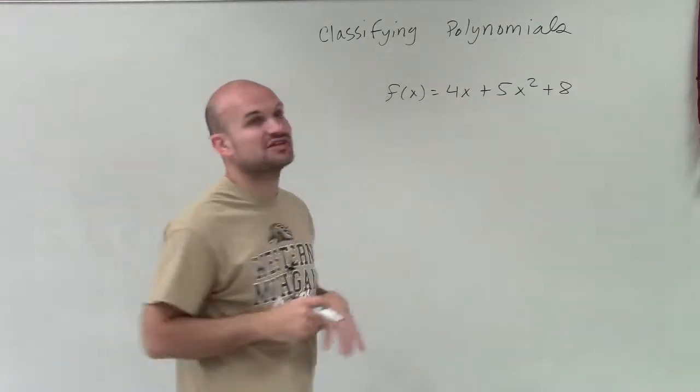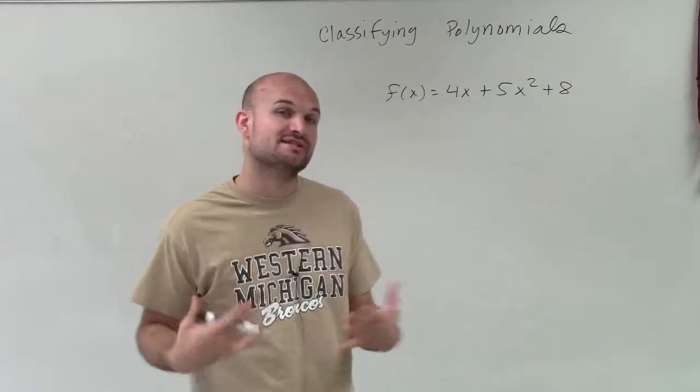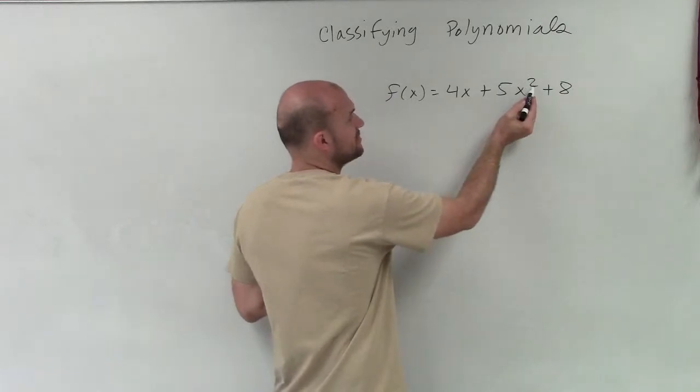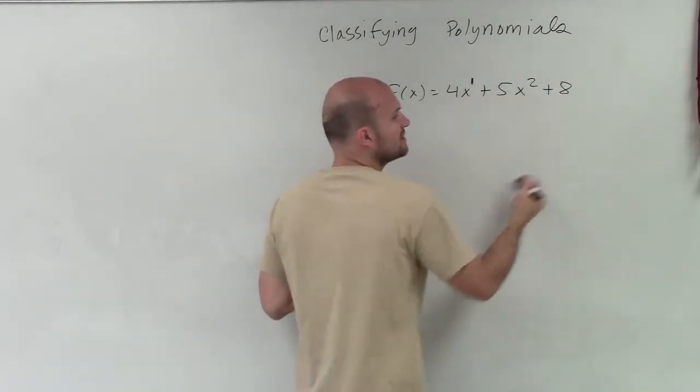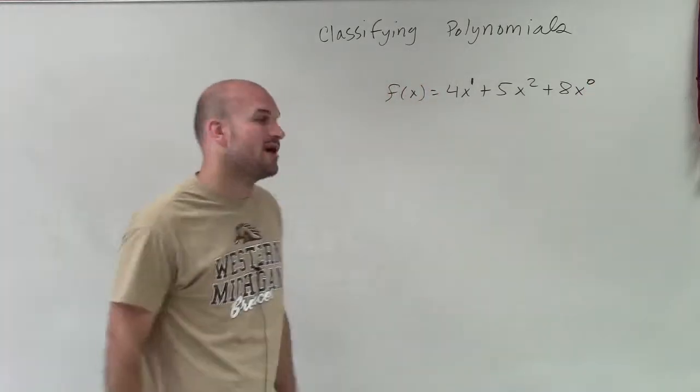So the main important thing, though, is we need to make sure that we have our exponents in descending order. Well, here we have an exponent of 2. Here it's not written, so we have an exponent of 1. Here I don't even have an x, so I could write this as x to the 0 power.